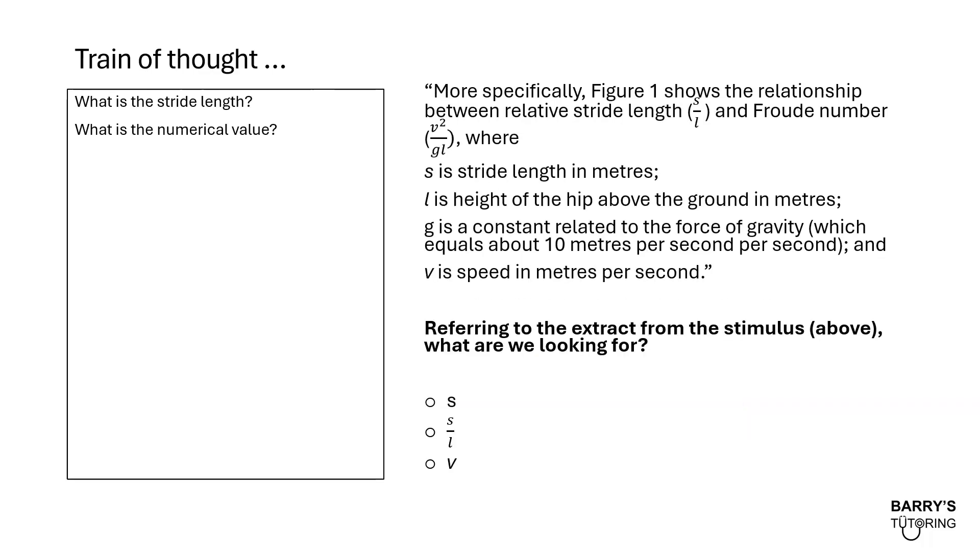Here we've got another extract from the stimulus. I'm not going to read it. I'll get you to have a read yourself. And specifically, I want you to figure out what exactly are we looking for? Are we looking for S, S on L or V? Remember, looking at our train of thought, we are trying to figure out the stride length. And also, we're trying to figure out its numerical value. That's why we're looking for the symbols because maybe that'll help us to figure out what equation we're going to use or what other information we might need to use. So what do you think? Are we looking for S? Are we looking for S on L or V?